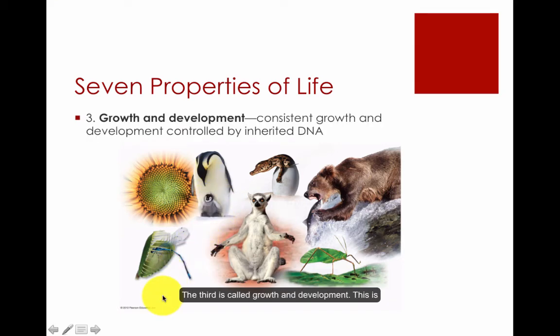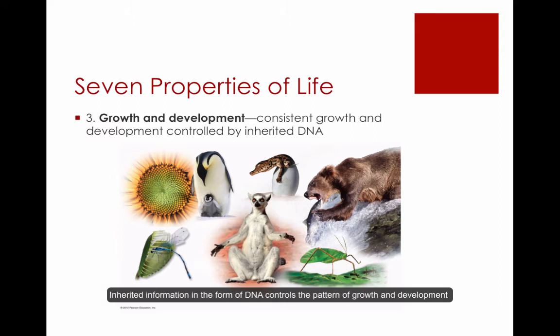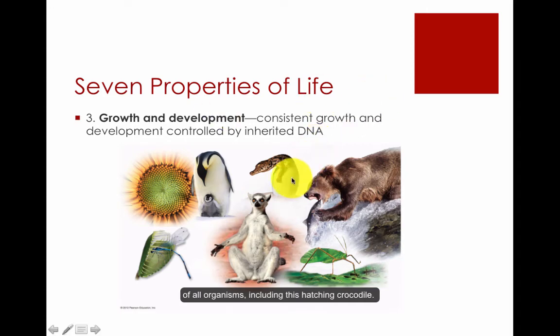The third property is called growth and development. This is consistent growth and development controlled by inherited DNA. Inherited information in the form of DNA controls the pattern of growth and development of all organisms, including this hatching crocodile.